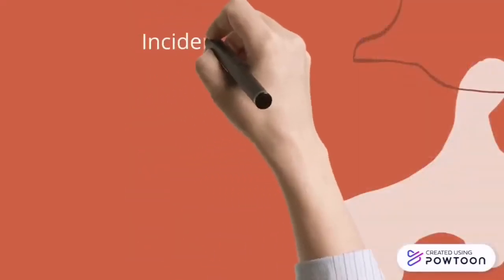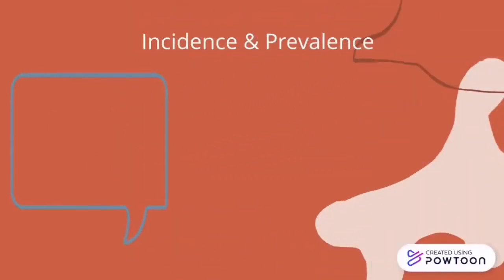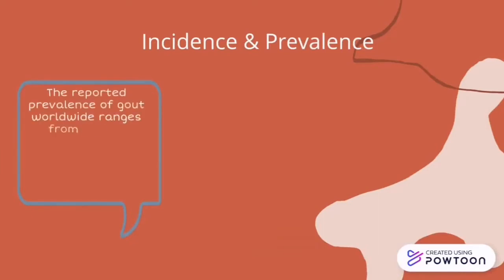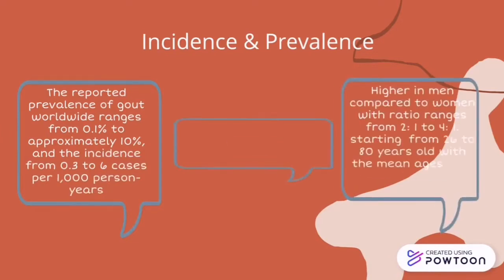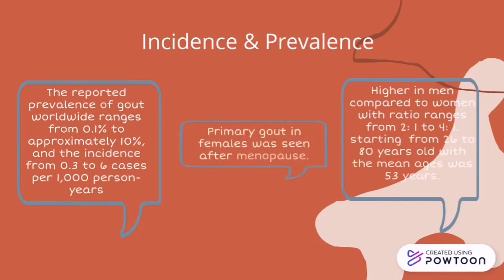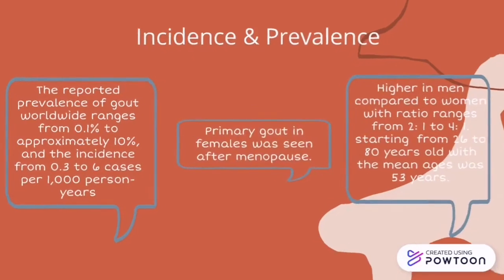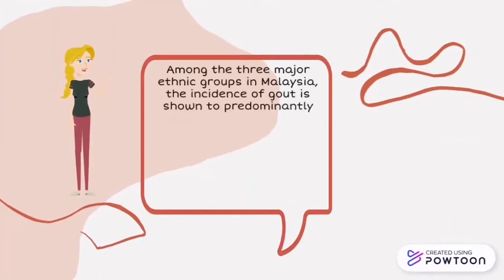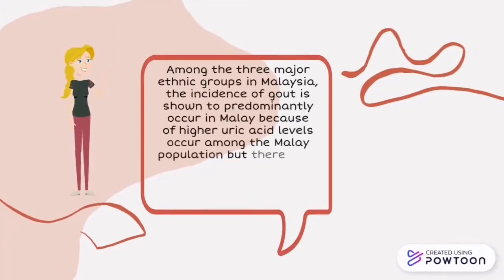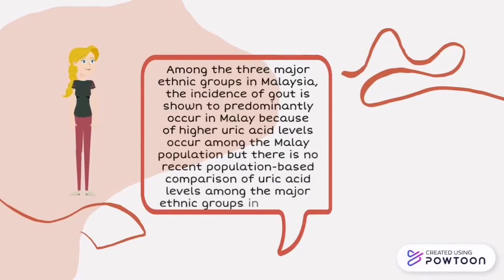The reported prevalence of gout worldwide ranged from 0.1% to 10%, and the incidence from 0.3 to 6 cases per 1,000 per year. It was usually higher in men compared to women, with the mean age of 53 years old. Among the three major ethnic groups in Malaysia, the incidence of gout predominantly occurs in Malay because of higher uric acid levels. However, there is no recent population-based comparison of uric acid levels among the major ethnic groups in Malaysia.